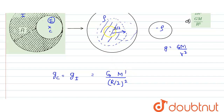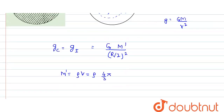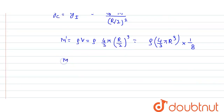Now we find M', the enclosed mass. M' equals density times volume = rho times (4/3)π(R/2)³ = rho times (4/3)πR³ times (1/8). Since rho times (4/3)πR³ equals the total mass M, we get M' = M/8.